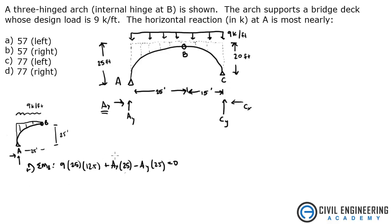So that's one equation. We've got two unknowns. We've got our AX and our AY. Next thing I'm going to look at is the entire arch, because if I look at that entire arch, I know that if I can take the sum of the moments about C, then I can get AX and AY.